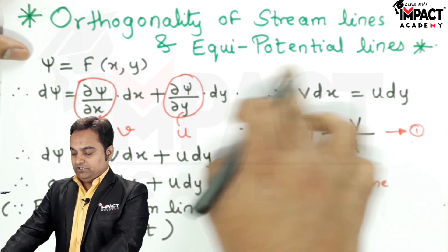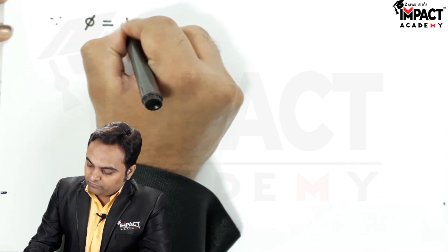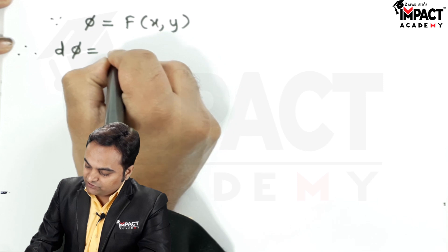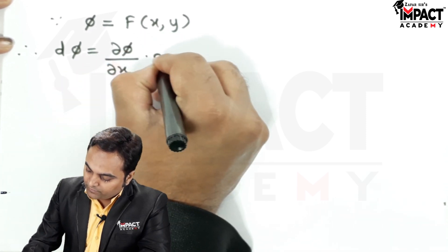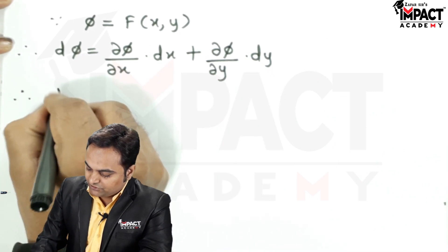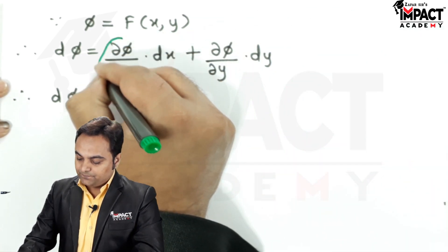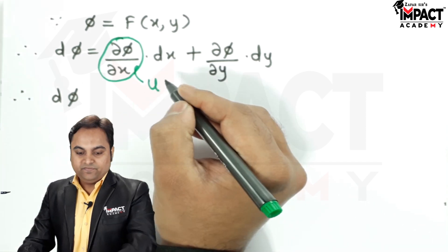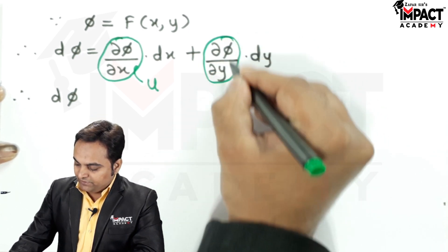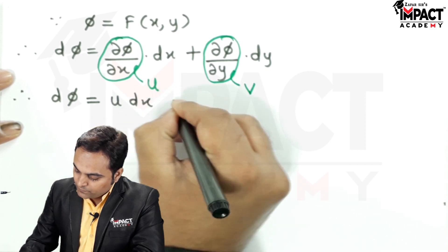Similarly, for the equipotential lines: the equipotential function phi is also a function of x and y. Differentiating, d phi equals partial phi with respect to x times dx plus partial phi with respect to y times dy. As per the definition of the equipotential function, phi differentiated with respect to x gives the velocity in the positive x direction, which is u, and phi differentiated with respect to y gives the velocity in the positive y direction, which is v. So d phi equals u dx plus v dy.